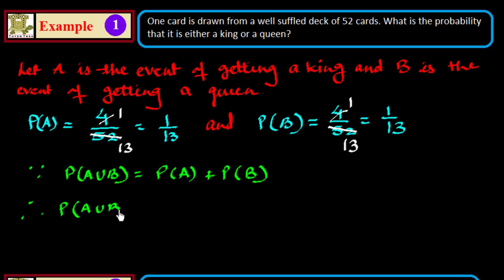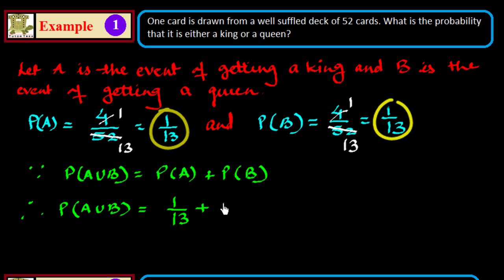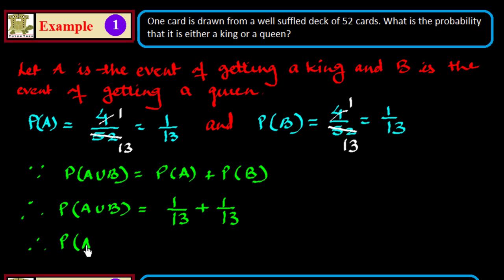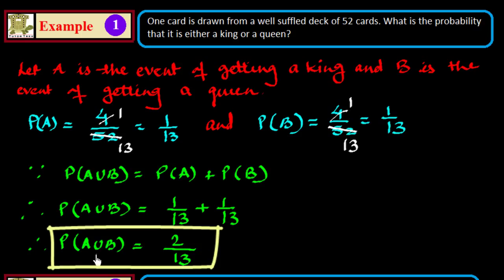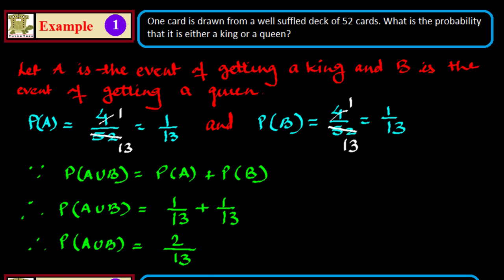P(A∪B) = P(A) + P(B) = 1/13 + 1/13. Taking 13 as common, we get 1 + 1 = 2, so P(A∪B) = 2/13. This is our answer — the probability that the card is either a king or a queen is 2/13, meaning out of 13 chances we get 2 chances where the card would be a king or a queen. This is Case 1 of the Addition Theorem.